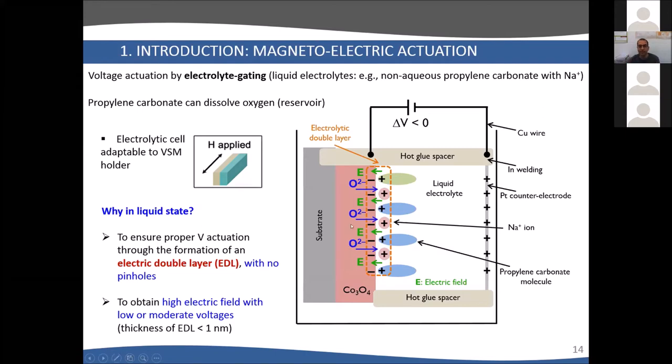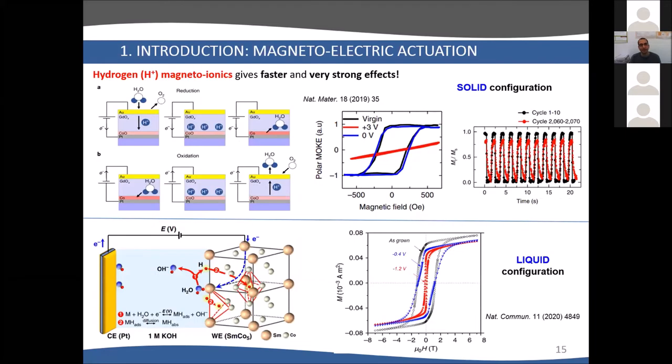What happens in this liquid is that there are ions in solution that form what is called the electric double layer. If we apply negative voltage, sodium goes here and forms this electric double layer, which is extremely thin, less than one nanometer. This means that with moderate voltage, you can get a very high electric field, because electric field is voltage divided by the thickness of the electric layer.